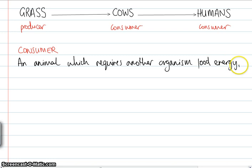So anything but the plants which can create their own energy. So cows need plants, grass, so they are a consumer.